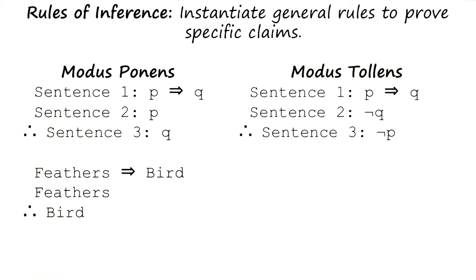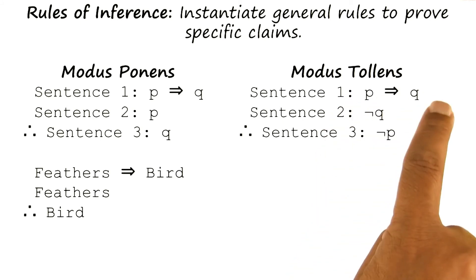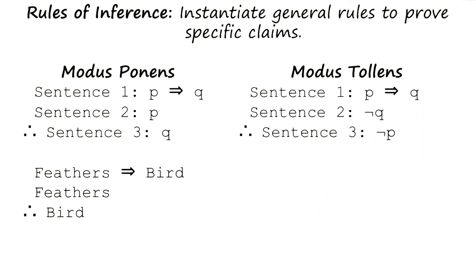Here is a second rule of inference. This is called modus tollens. Again, I have sentence S1, p implies q, and I have a second sentence, not q. Therefore, I can infer that not p.